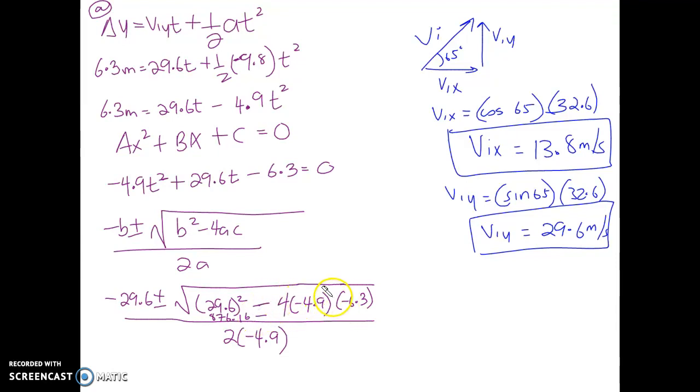876.16. And this is also going to be negative. Three negatives, so of course we're going to end up with a negative. So 4 times 4.9 times 6.3, what do you get? 123.48. So subtract the two and then square root it. What do you get?